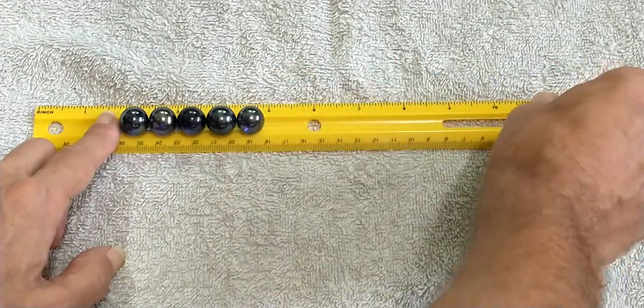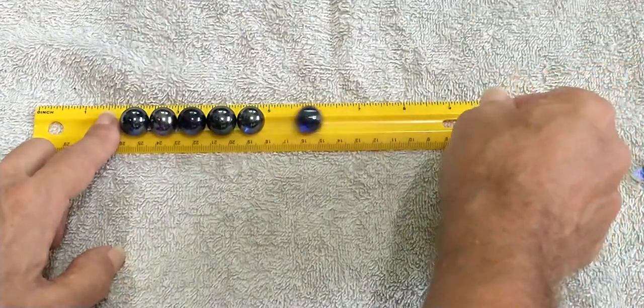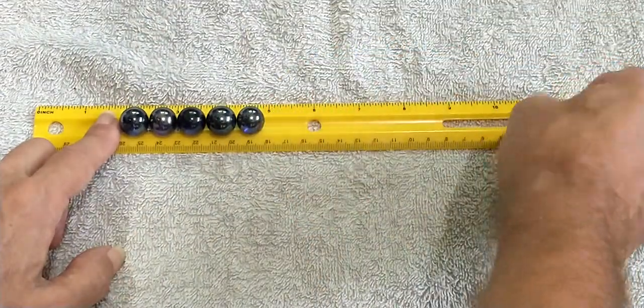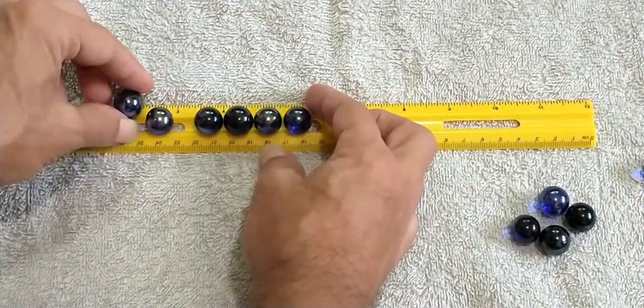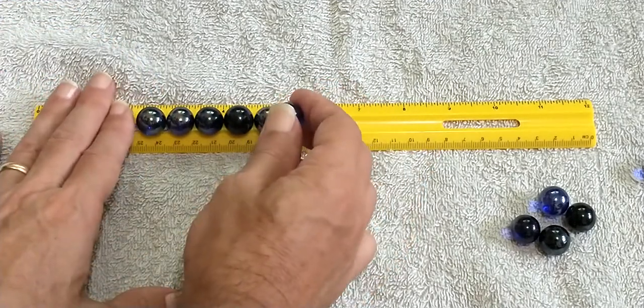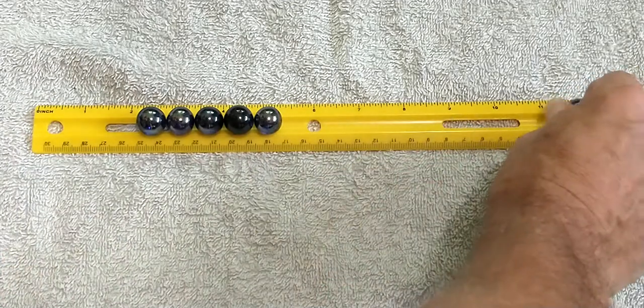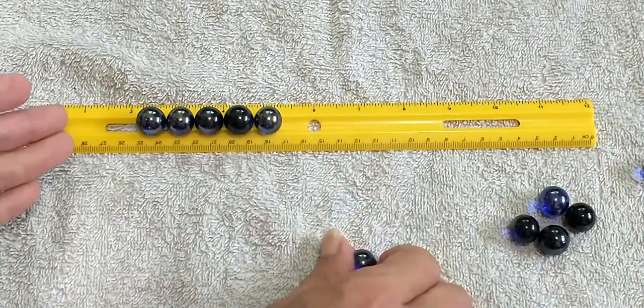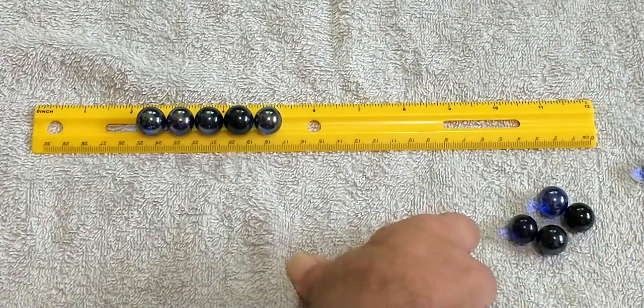Roll it in. You can try rolling it in slow, you can try rolling it in fast, but without a finger here, just leaving the five touching each other on the ruler. Roll one in. What happens? Specifically, how many marbles roll out?